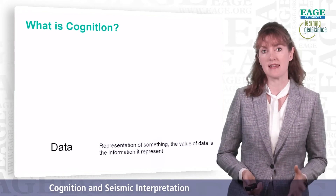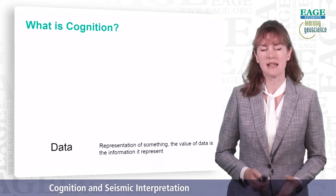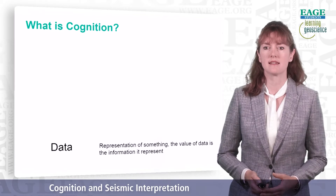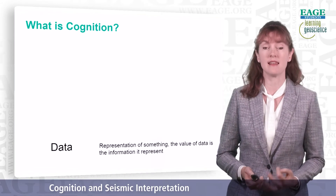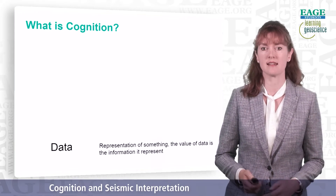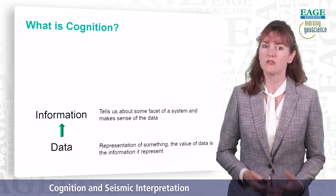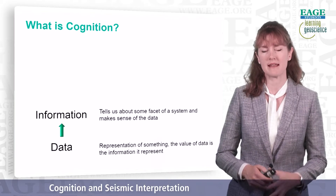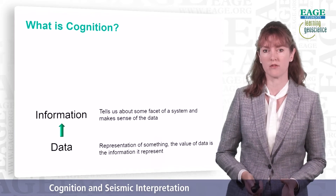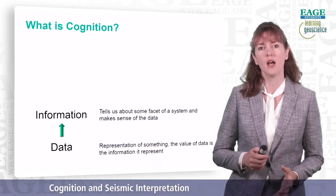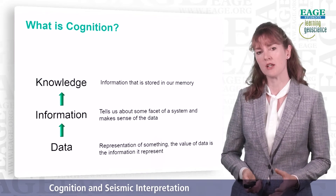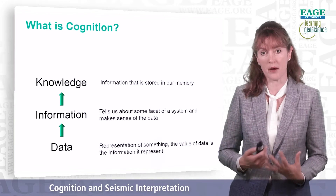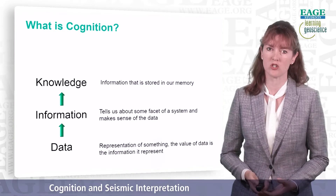First of all, we have data at the bottom level, and data is simply a representation of something. Its real value is in the information that it contains, that it represents. Information tells us about some facet of a system, and it helps us make sense of the data that we've got in front of us. When we have information and once we internalize it and store it in our brains, in our memory, then it becomes knowledge.